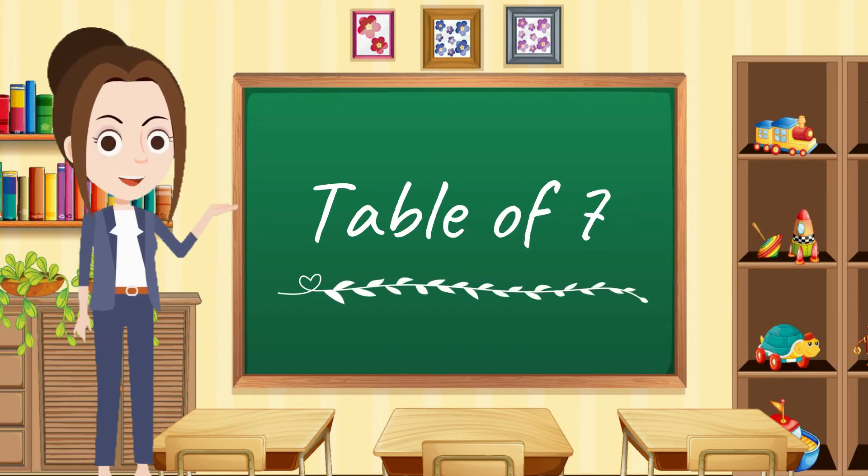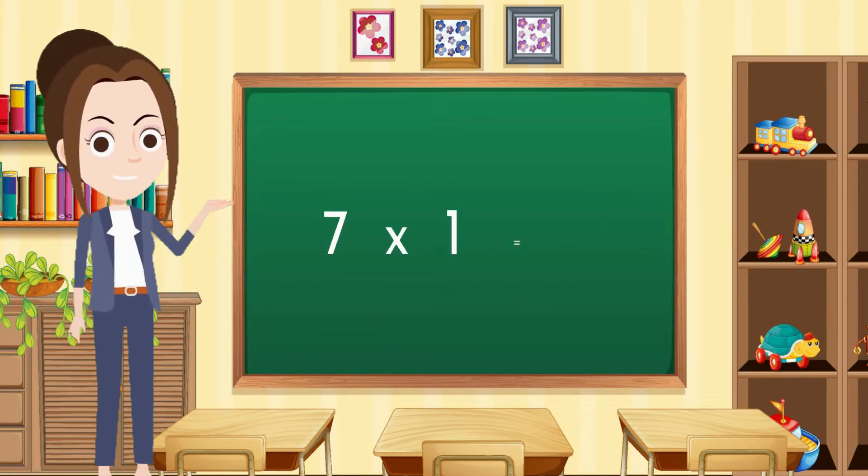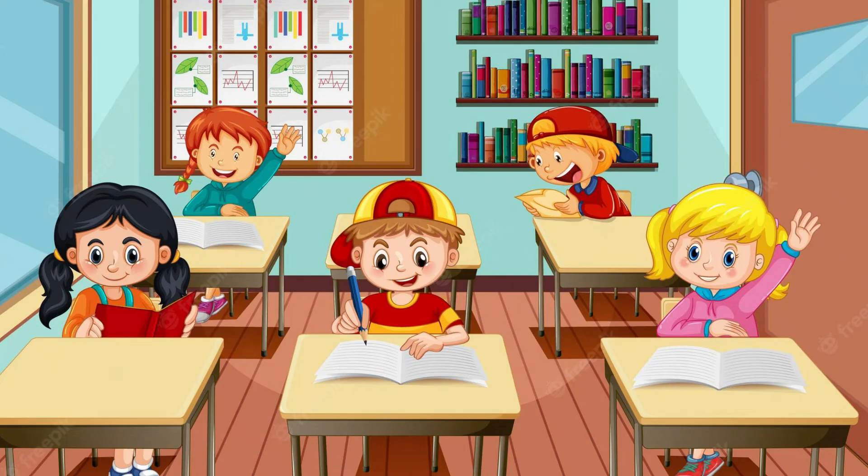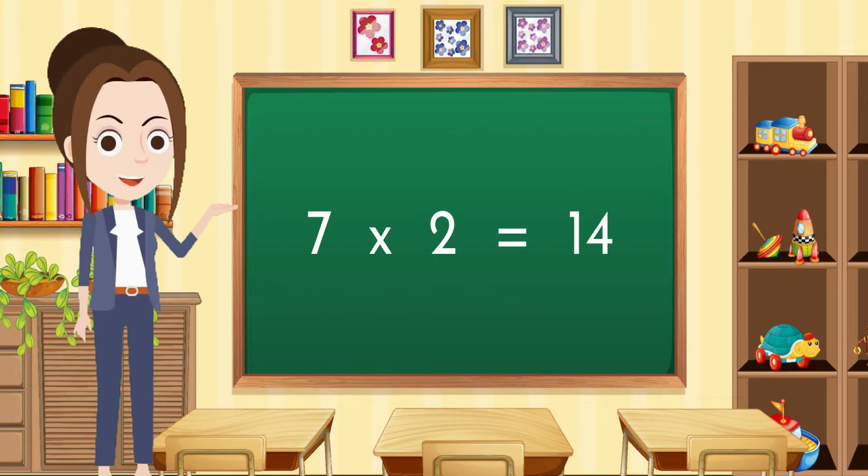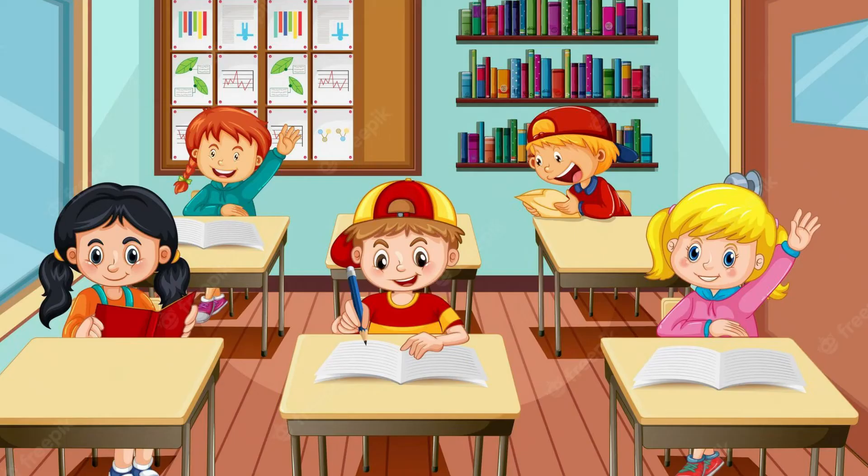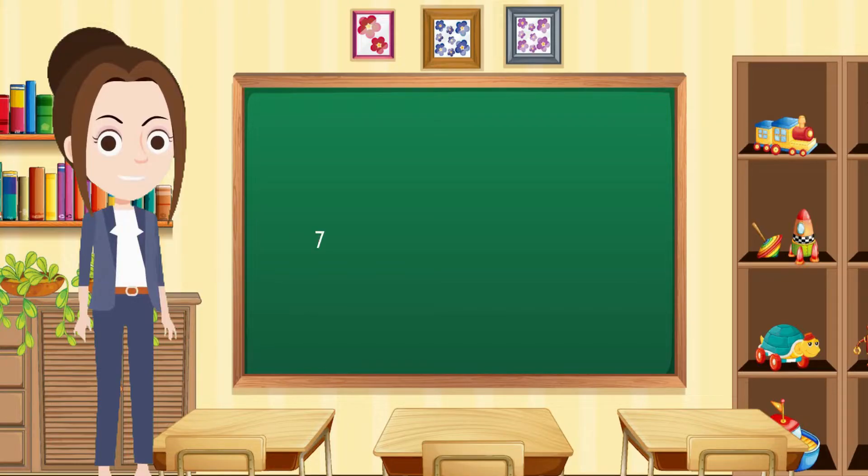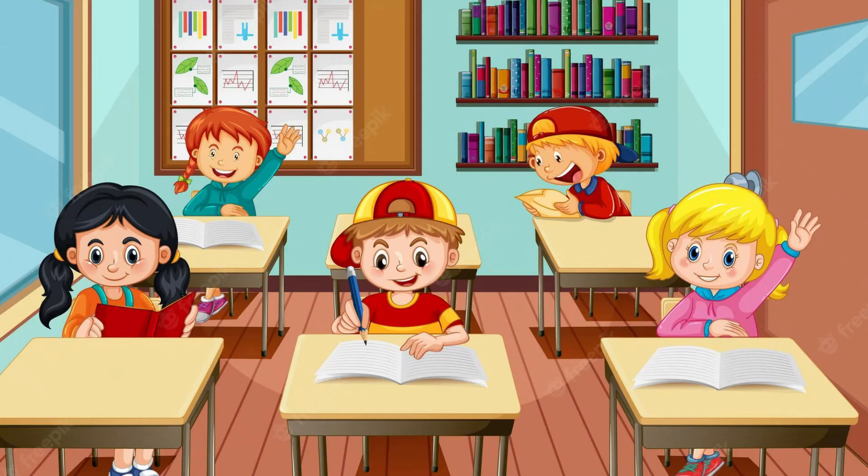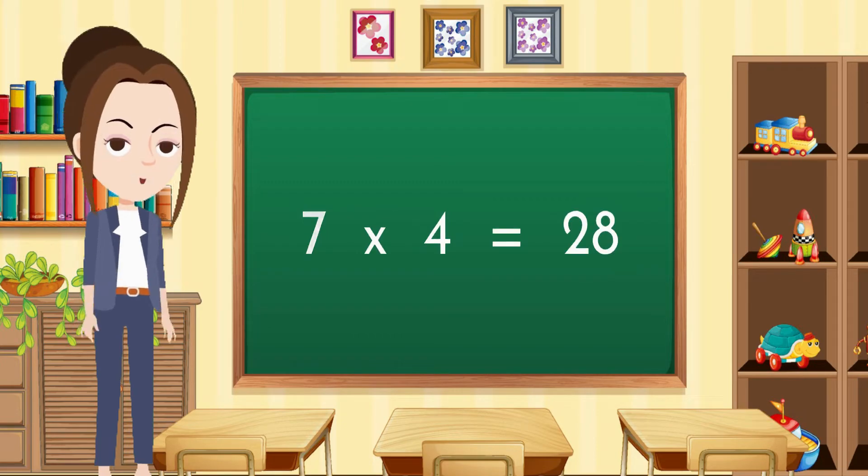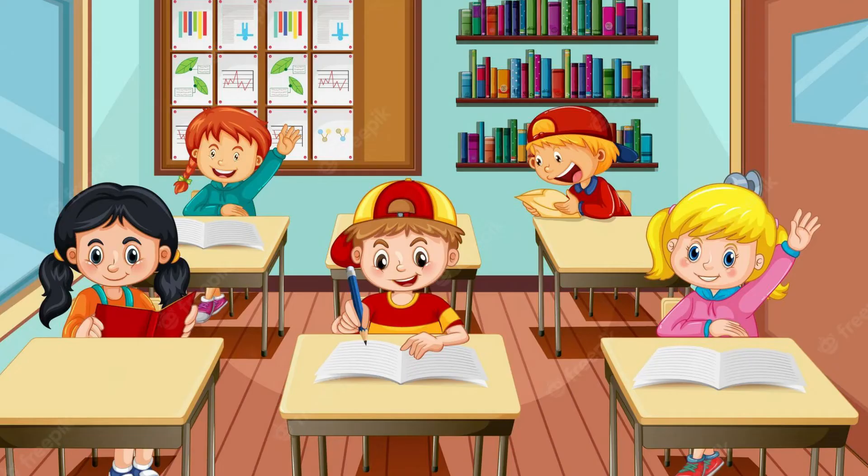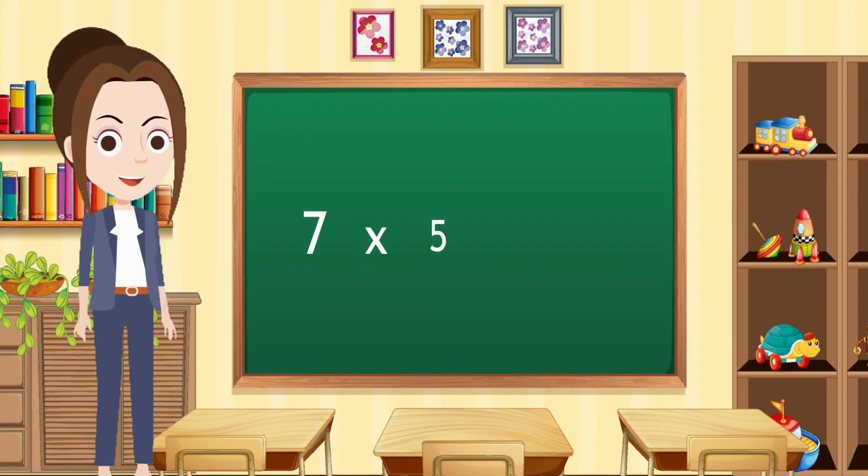Dear kids, today we will learn the table of seven, so let's start with me. Seven ones are seven, seven twos are fourteen, seven threes are twenty-one, seven fours are twenty-eight, seven fives are thirty-five.